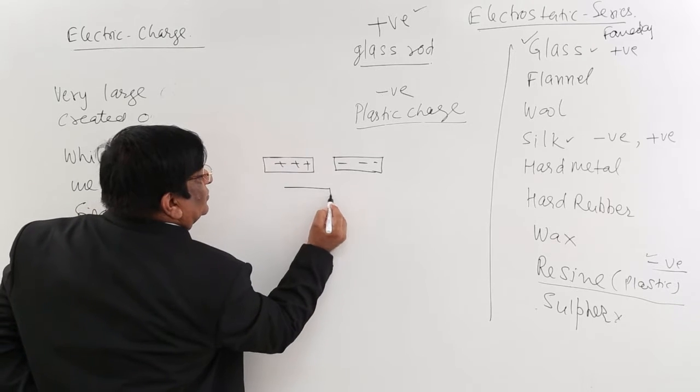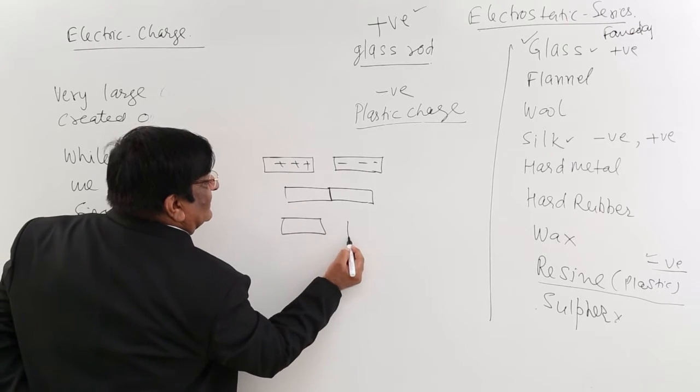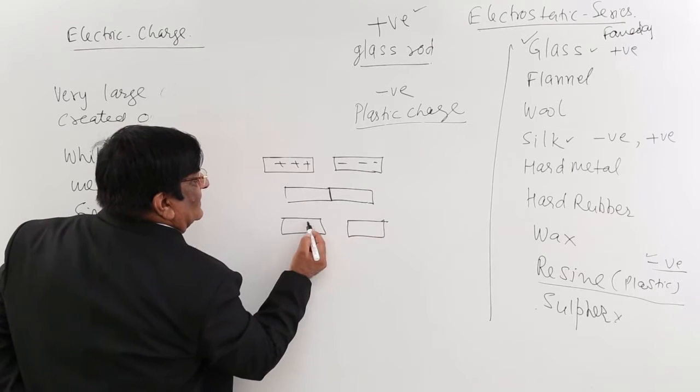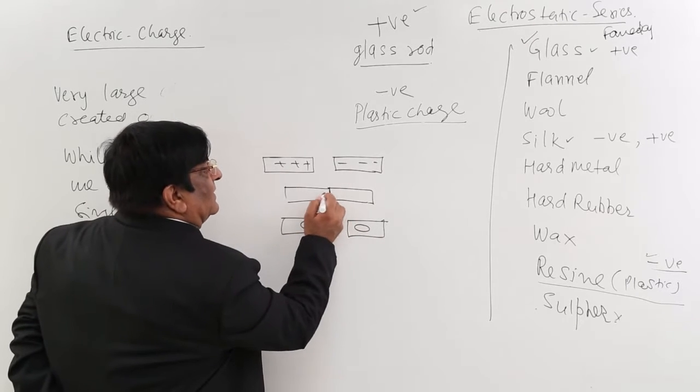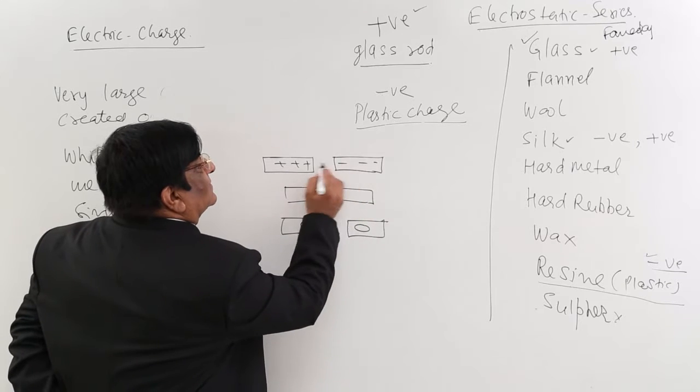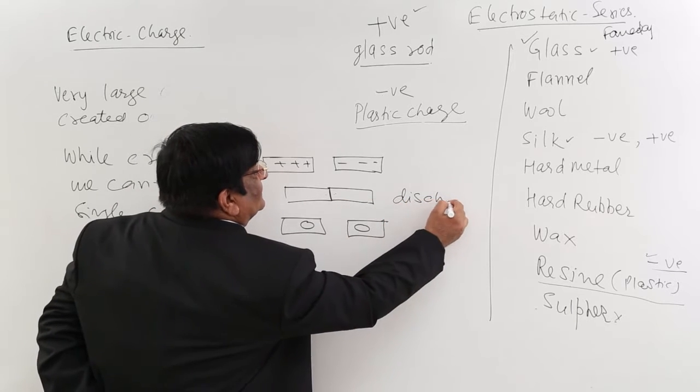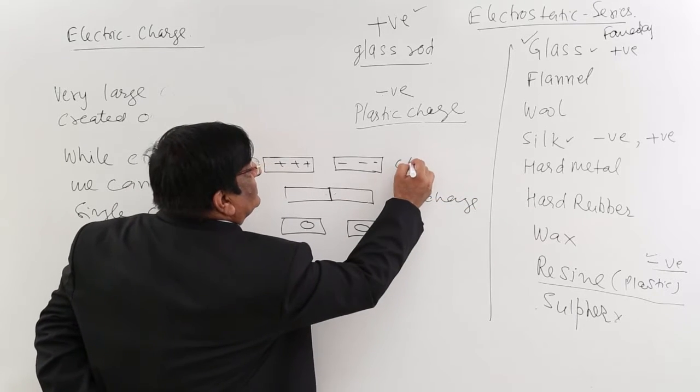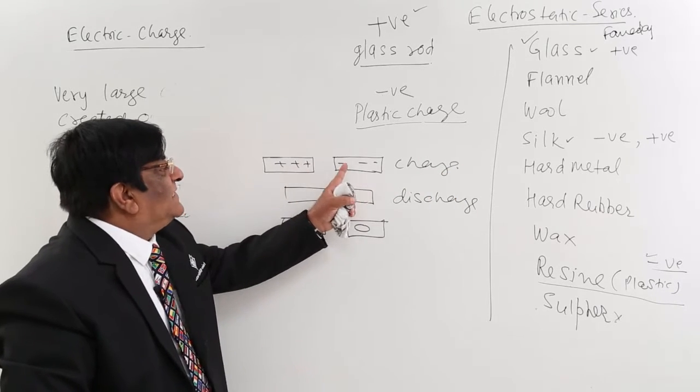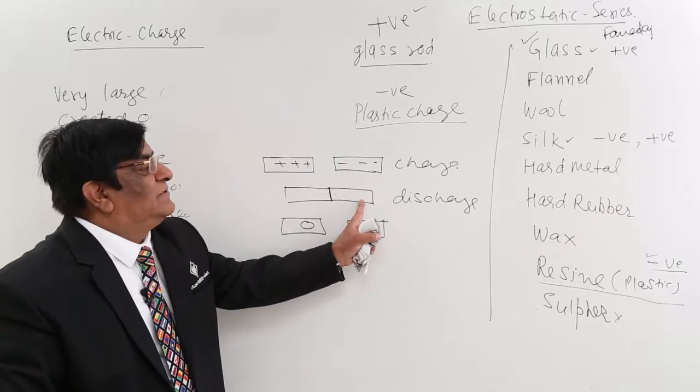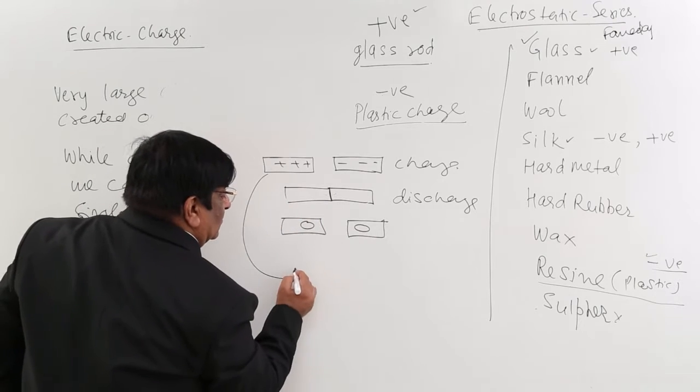When we touch the two and then again separate it, and now we find that both charges have converted to zero. This process when we touch things, something happens, the charges nullify each other and this we call discharge. This is charge and this is our discharged body. So the vanishing act of the charges is discharge.